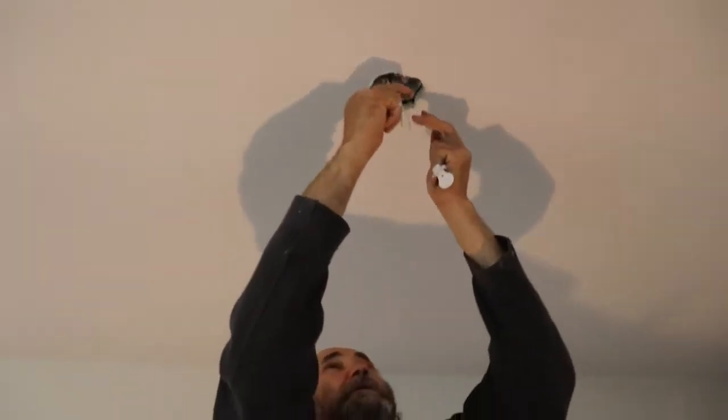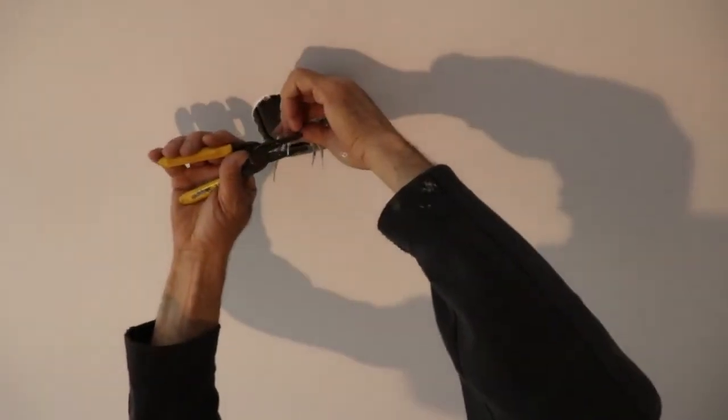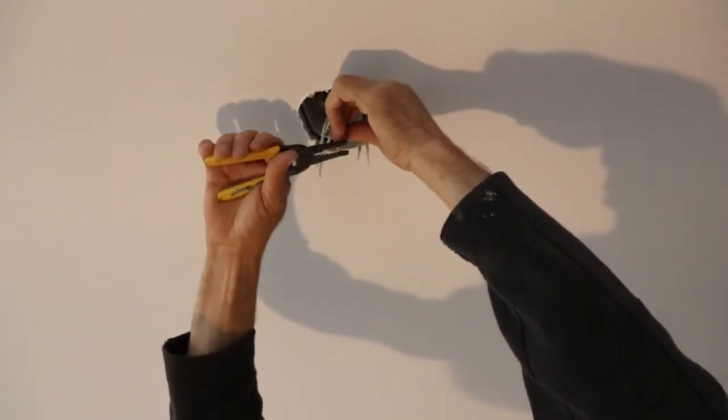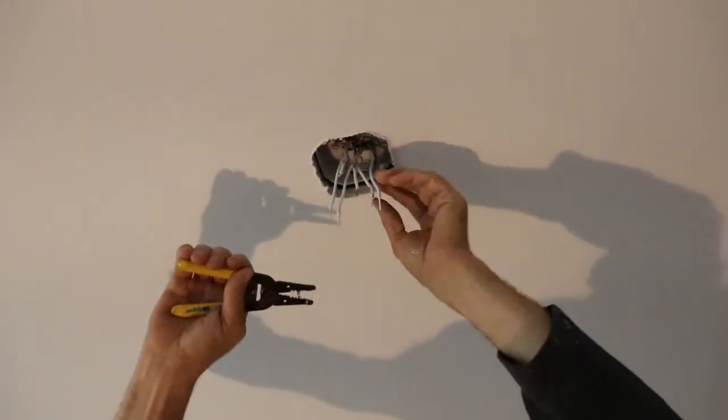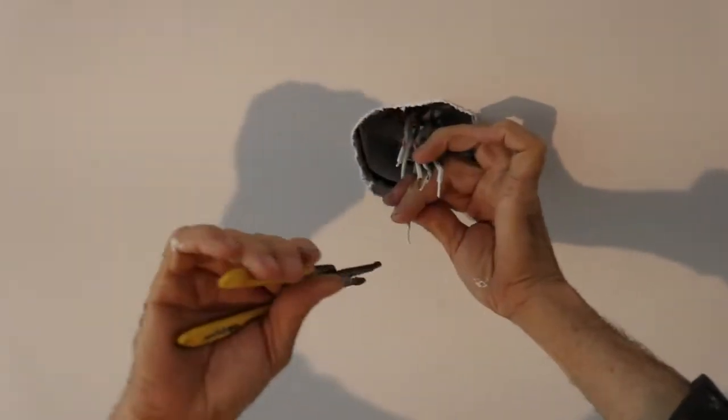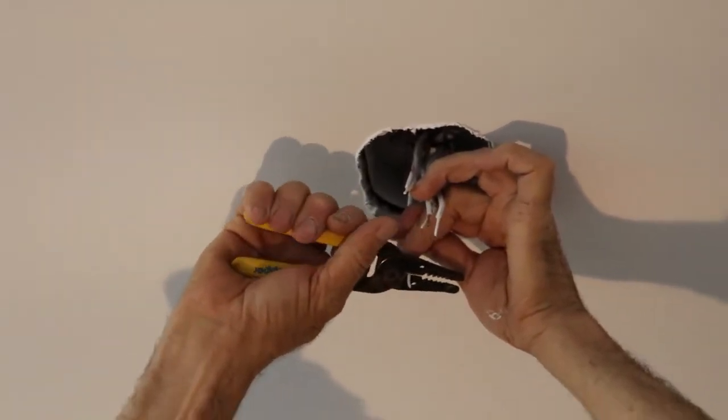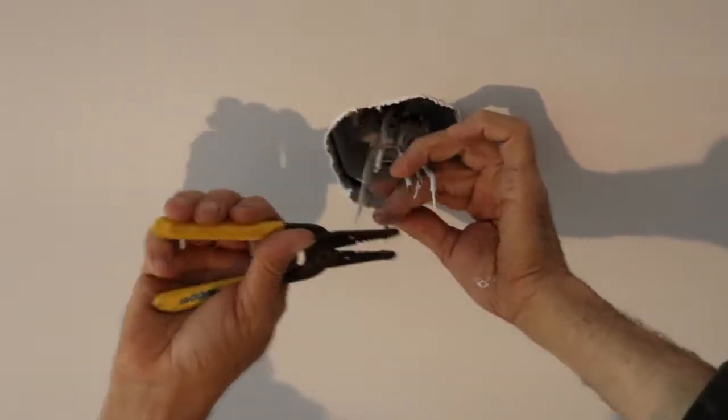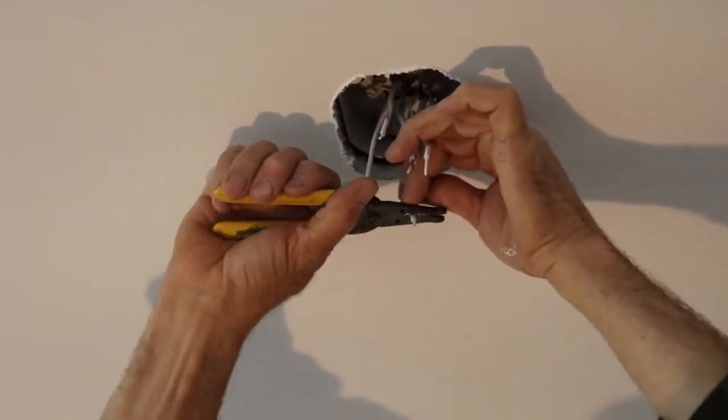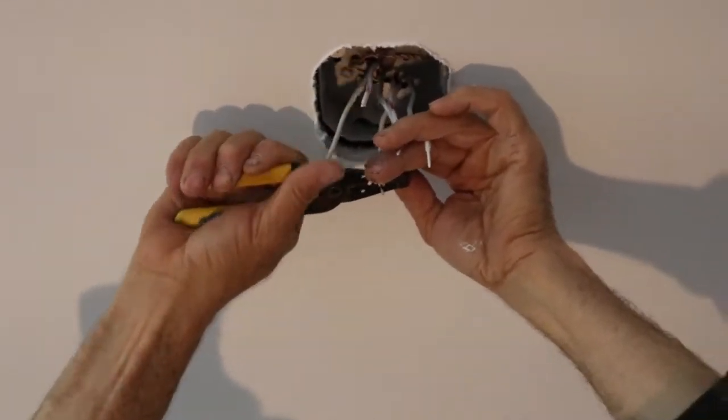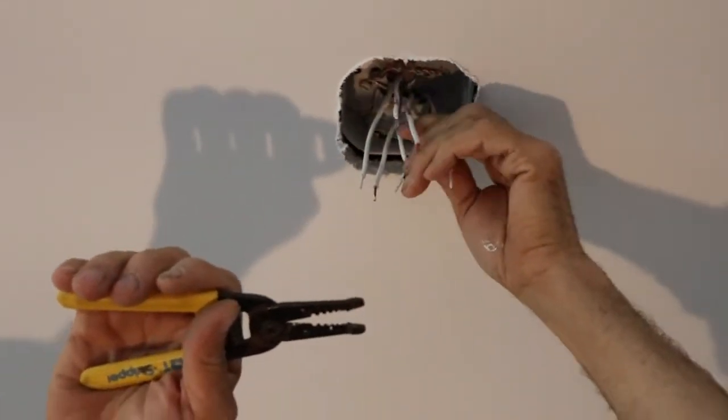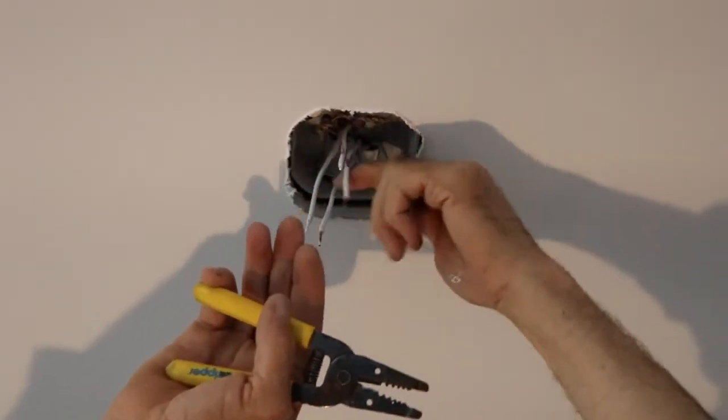I'm going to connect red to red. I'm just going to cut this back a little bit because I want them to be the same size, make life a little bit easier to push it in. This is white neutral. Now we have the hot wire, the black one.